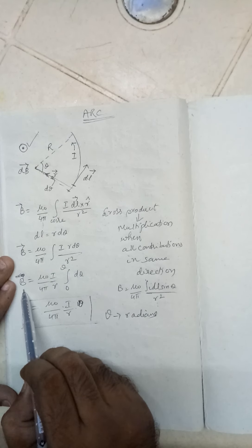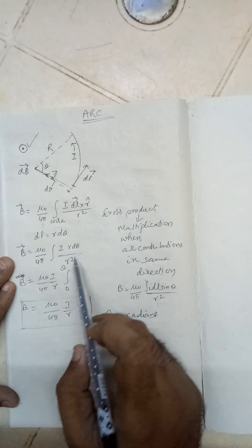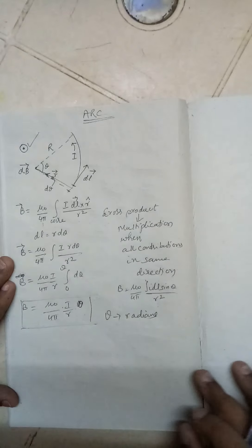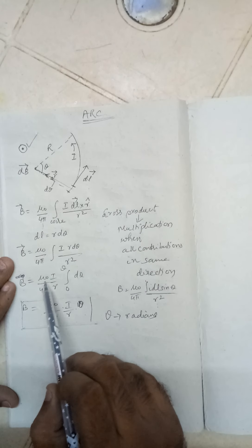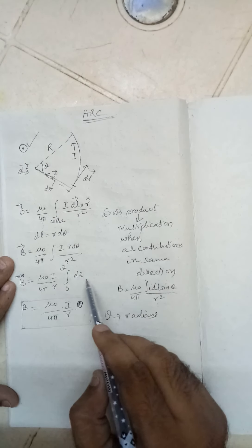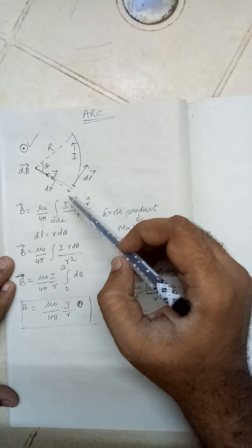Take i by r outside, so it will be mu_0 i by 4 pi r, integration of d theta. You can see that I need to write the boundaries for theta. So from 0 to theta it is varying. We are writing for the wire and the boundaries are 0 to theta.